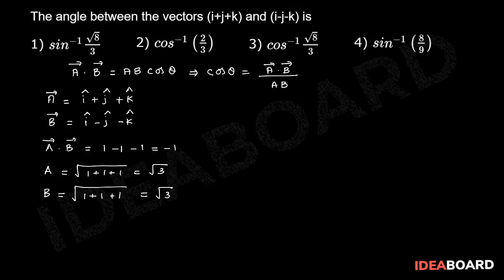Thereby we are getting cos theta is equal to a bar dot b bar minus 1 by modulus of a bar root 3, b bar root 3, which is equal to minus 1 by 3.